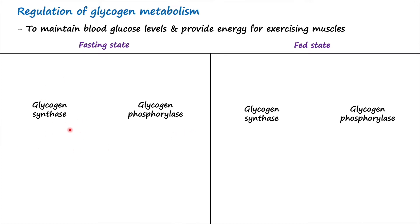Glycogen synthase is the rate-limiting enzyme for glycogenesis, whereas glycogen phosphorylase is the rate-limiting enzyme for glycogenolysis. During fasting conditions, blood glucose levels are low, which results in an increase in the hormone glucagon, as well as an increase in AMP levels. AMP is an indicator of an energy-deficient state in the cells.